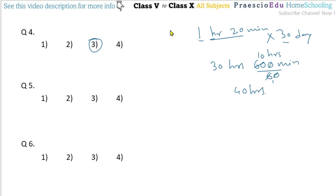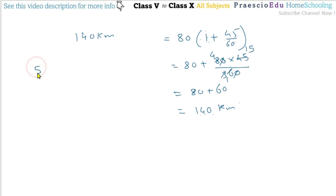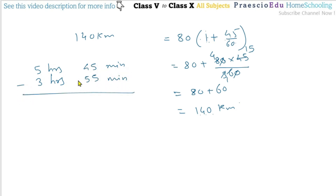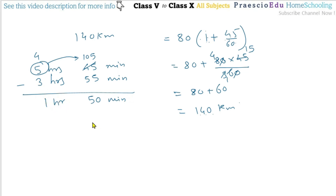Question 5: Anita travelled 5 hours 45 minutes by train and 3 hours 55 minutes by bus. How much longer did she travel by train? Subtracting: 45 − 55 is not possible, so borrow 1 hour, making it 4 hours and 60 + 45 = 105 minutes. Then 105 − 55 = 50 minutes, and 4 − 3 = 1 hour. So 1 hour and 50 minutes — shown in option number 2.